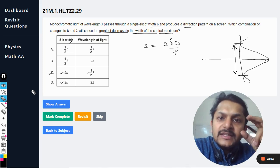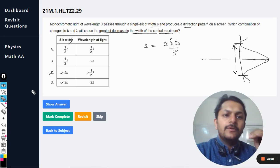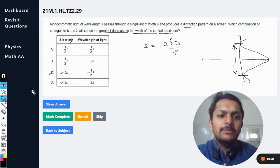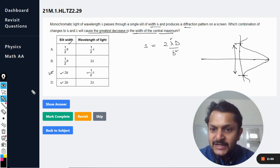So accordingly, the width of the central maxima will be reduced to the maximum.